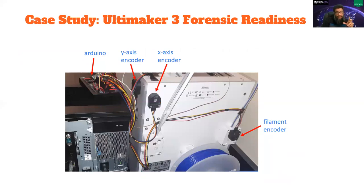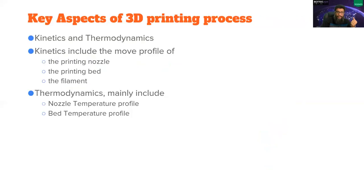So for case study, we selected Ultimaker 3. It's a famous FDM printer. So for the sensors, as we discussed, like the kinetic and thermodynamics, kinetics related to movement, thermodynamics related to temperature are key processes in 3D printing.